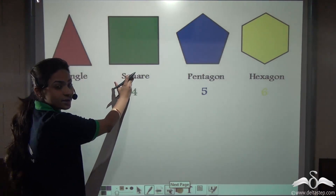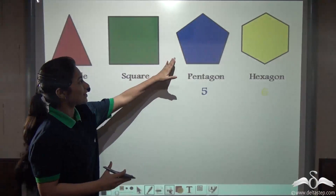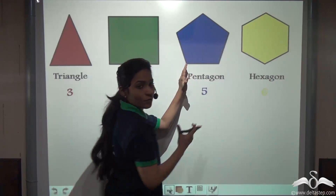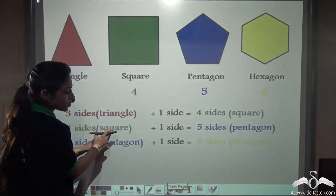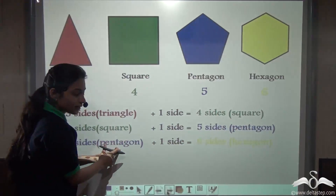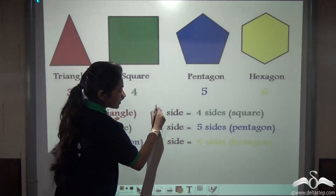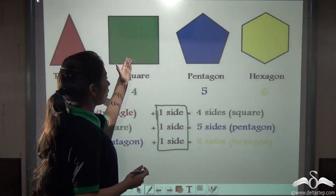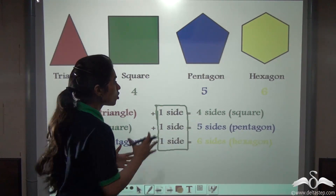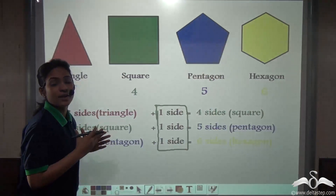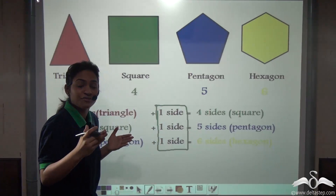Now, square is actually one side added to the triangle — 4 is 3 plus 1. Similarly pentagon is 4 plus 1, one side added to the square. Similarly hexagon is one side added to the pentagon. So 3 sides plus 1 side gives us 4 sides — a square. Square plus 1 side gives us a pentagon, and pentagon plus 1 side gives us a hexagon. So the difference between all these shapes is constant — one side each. So triangle, square, pentagon and hexagon are in an arithmetic series.